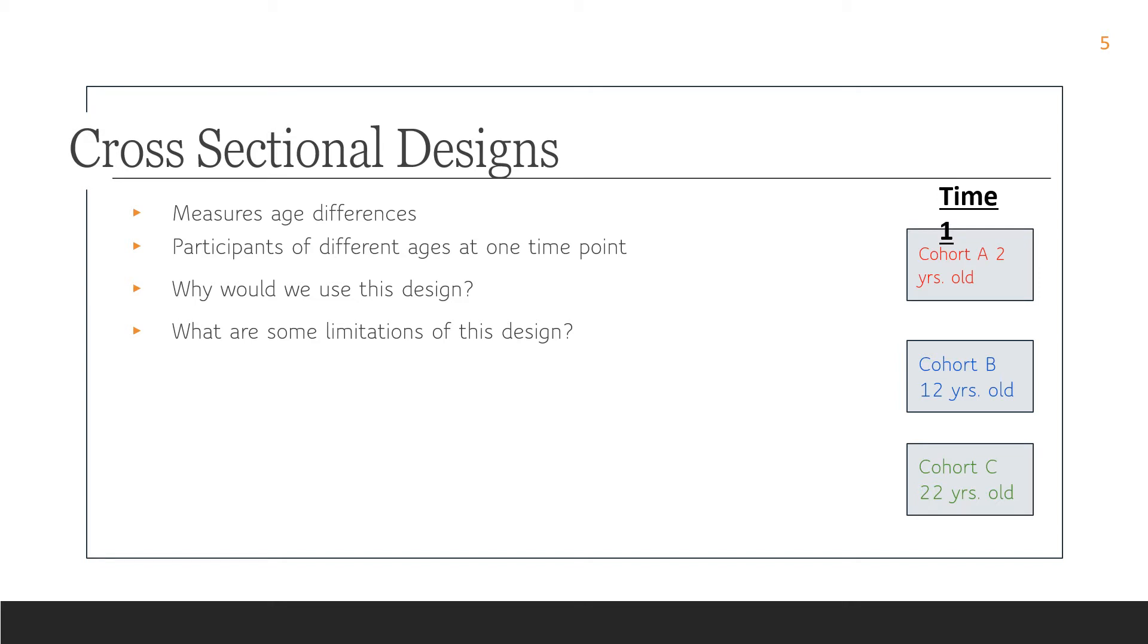So why would we use this type of design? Well, first of all, it's very quick as an approach to studying changes across the lifespan. We just measure vocabulary in each of these groups one time. So I can get three groups of people of different ages and then measure them one time and then compare the three groups. I don't have to follow them over time. It's not very expensive.